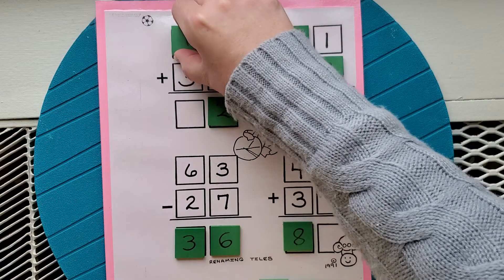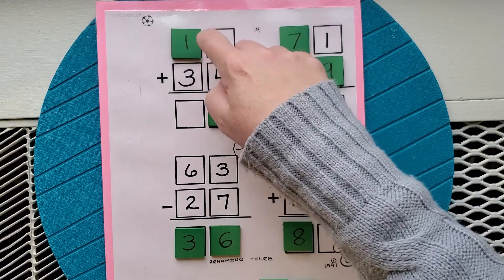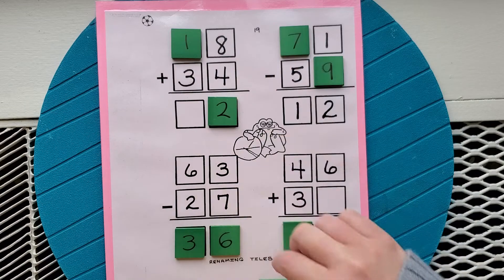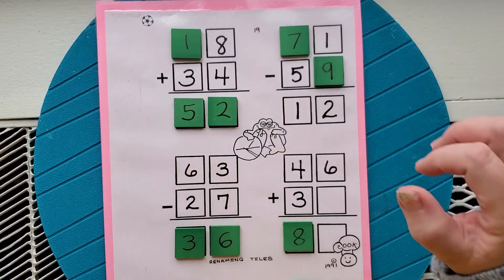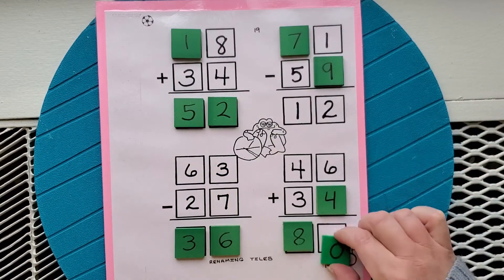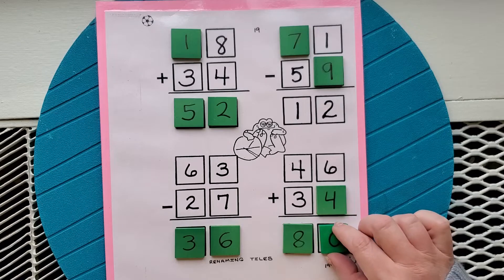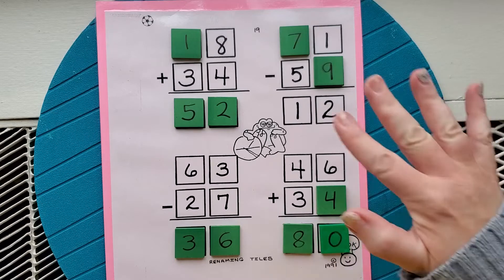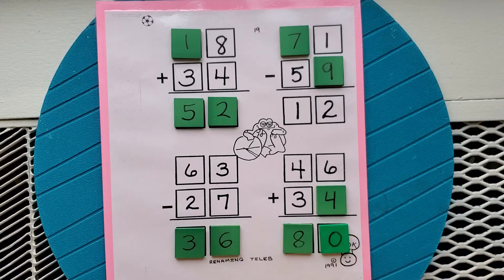So if we did, we know we had that 1 carried, so 1 plus 1 plus 3 is 5. And then we could go 4 and 0 right here. Aha! We have solved all four problems with the tiles that we had.